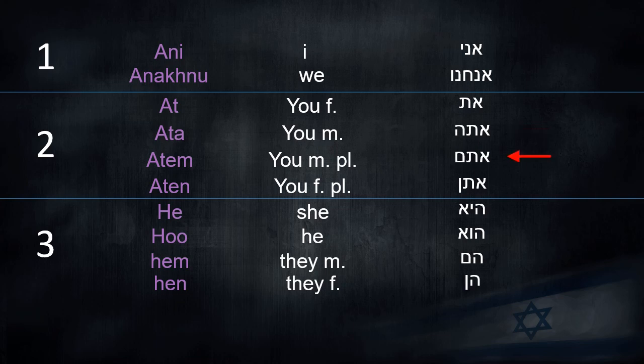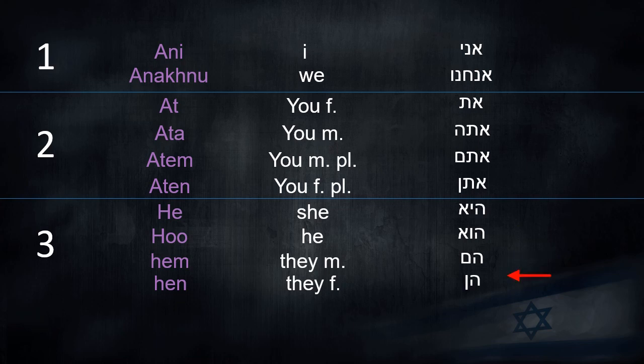Atem — that means you, males, plural. Aten — that means you, females, plural. He — that means she. Don't be confused with the English 'he' — in Hebrew, He means she. Hu — that means he. Hem — that means they, male. And Hen — that means they, females.